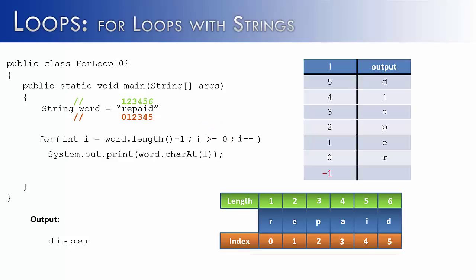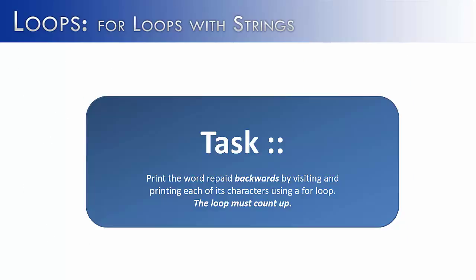To do the backwards print using substring instead of charAt, it looks the same as the last program: word.substring(i, i+1), where i+1 is excluded. Next, there's a trickier situation: printing 'repaid' backwards but with the loop counting forward — going up rather than down. Sometimes you can't control the direction your loop is moving, so this shows an interesting way to traverse backwards while the loop goes forward.